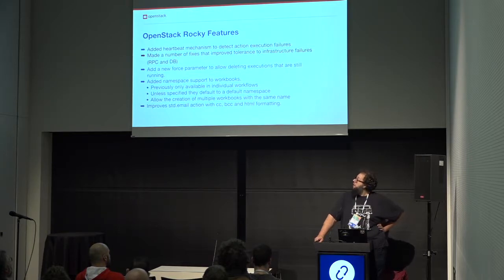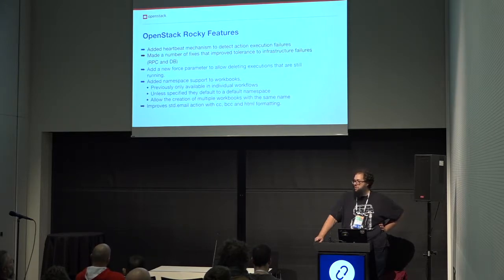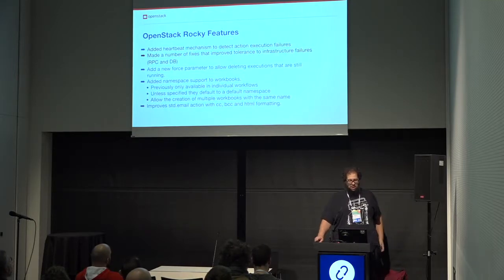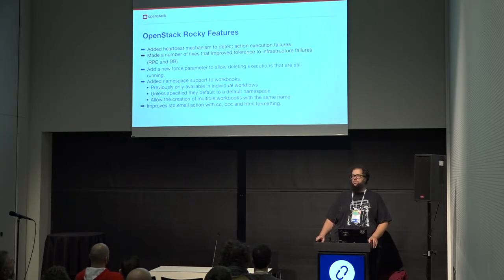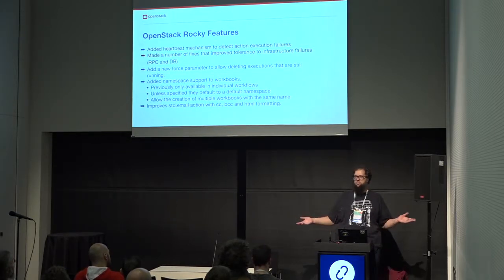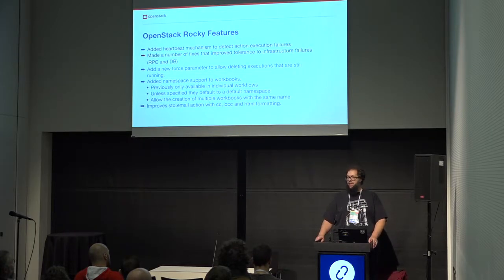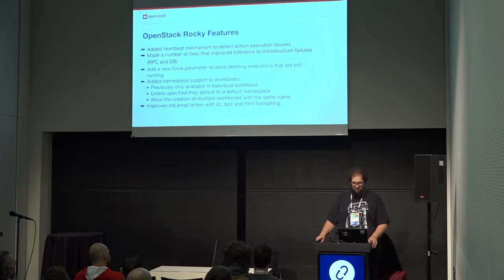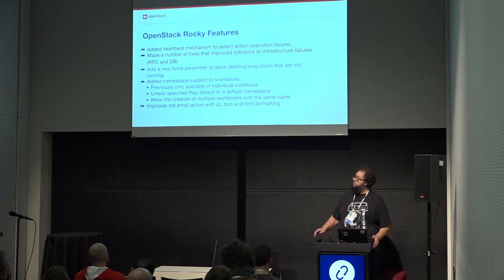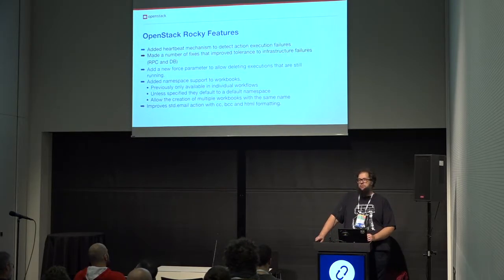Another thing that landed — and was a massive improvement for some Mistro users — is namespace support for workbooks. It was previously just for workflows, but now a full workbook can have a namespace. This allows users in a multi-user environment to not have to worry about having a unique name for their workflows. If two users tried to create a workflow with the same name, that was not previously allowed — now it is. And for backwards compatibility, it defaults to no namespace, so if you're not using it, it's completely transparent.